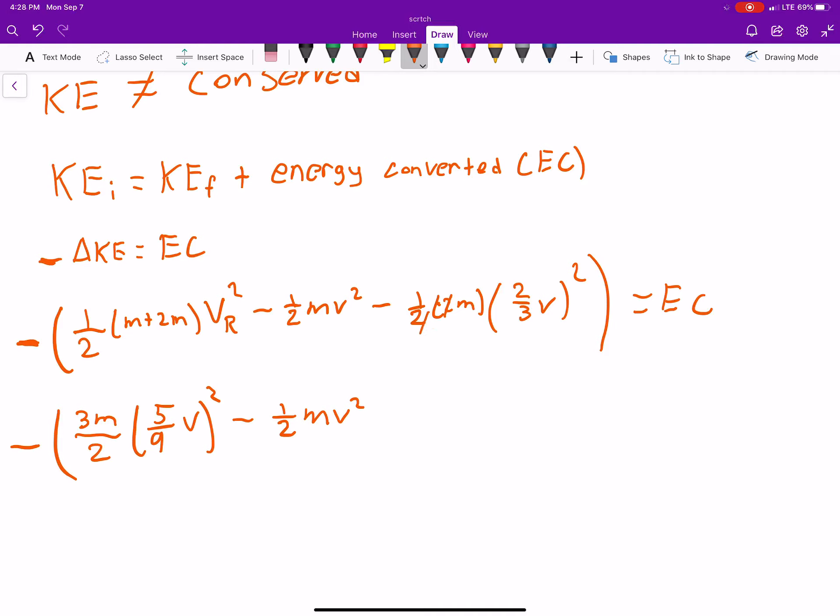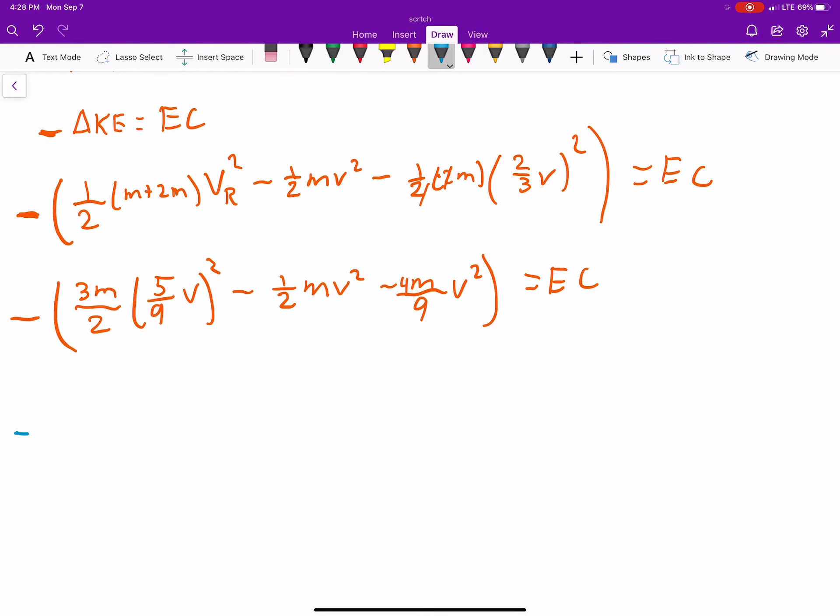So, you get minus m. And then, I'm going to just go ahead and square this, 4/9, so 4m over 9 v squared. Minus, 5 squared is 25. 25 times 3 is 75m, over, 81 times 2 is, let's just plug it in here, 162.